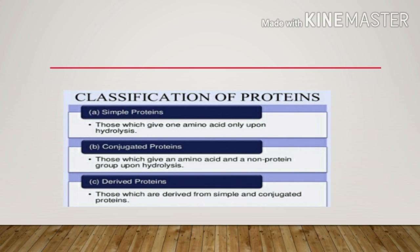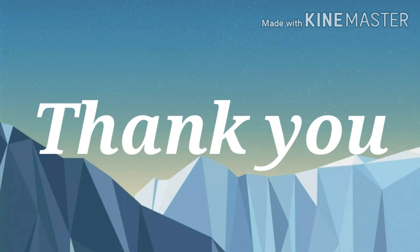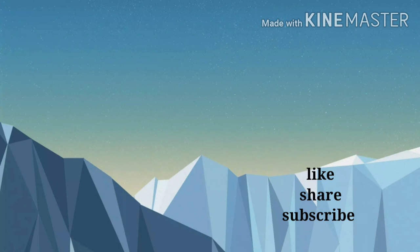Classification of proteins: simple proteins, conjugated proteins, and derived proteins. Simple proteins give amino acids only upon hydrolysis. Conjugated proteins give amino acids plus a non-protein group upon hydrolysis. Derived proteins are those derived from simple and conjugated proteins. Try to learn and achieve your goals. Thank you.